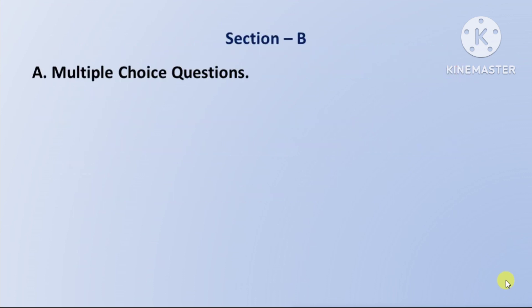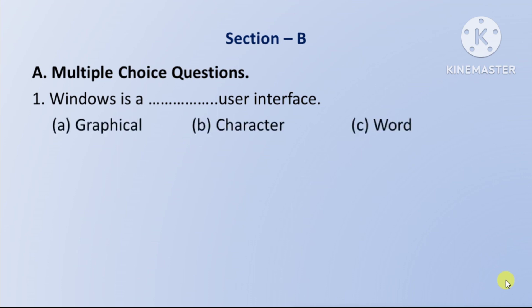Section B, multiple choice questions. First question: Windows is a — user interface. Option A: Graphical. Option B: Character. Option C: Word. The right answer is option A: Graphical.